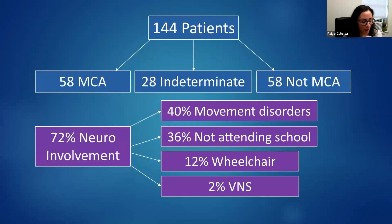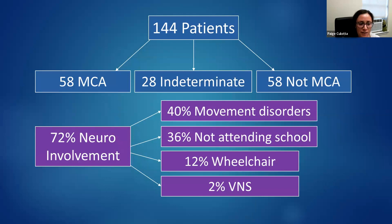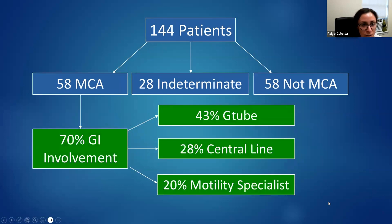Focusing more on neurology and GI since they strongly stand out: 72% of medical child abuse cases had neurologist involvement; of those children, 40% had movement disorders, many were not attending school, several had wheelchairs, and even VNS stimulators. Not attending school is a real trigger for concern. For GI, 70% had GI involvement, a large portion had G-tubes and central lines, and many were seeing motility specialists.